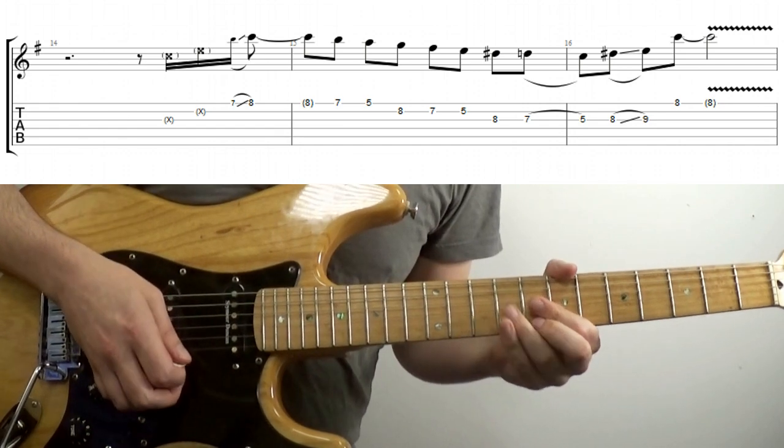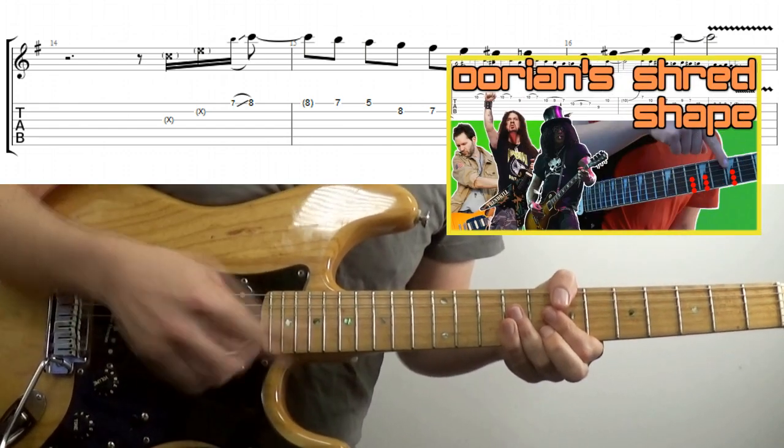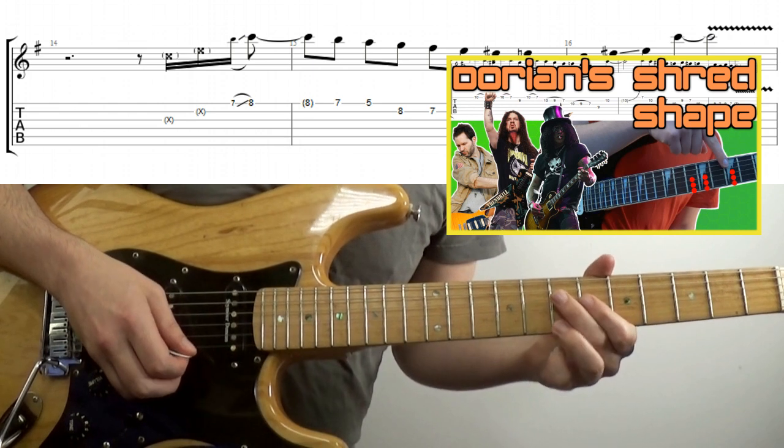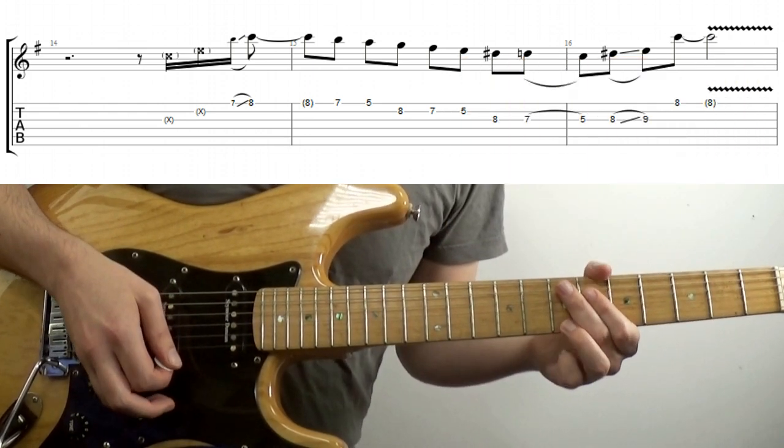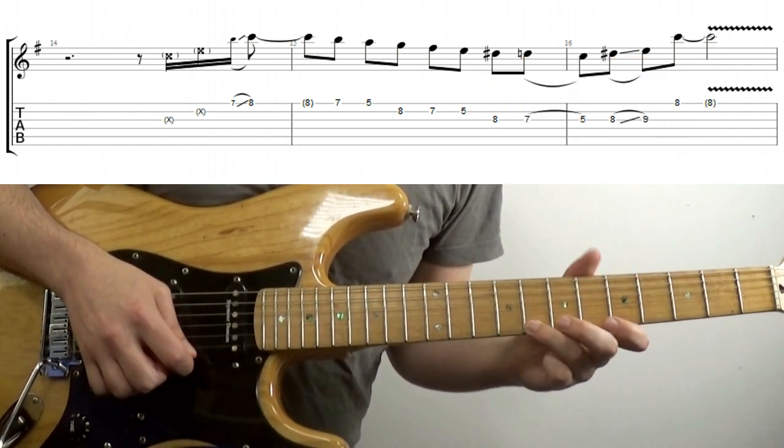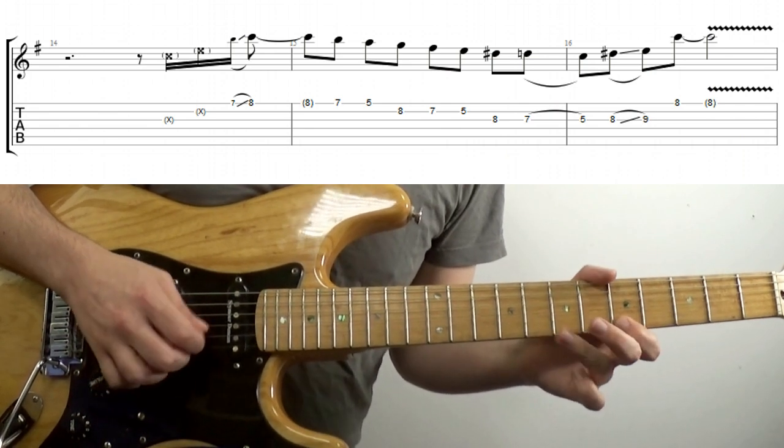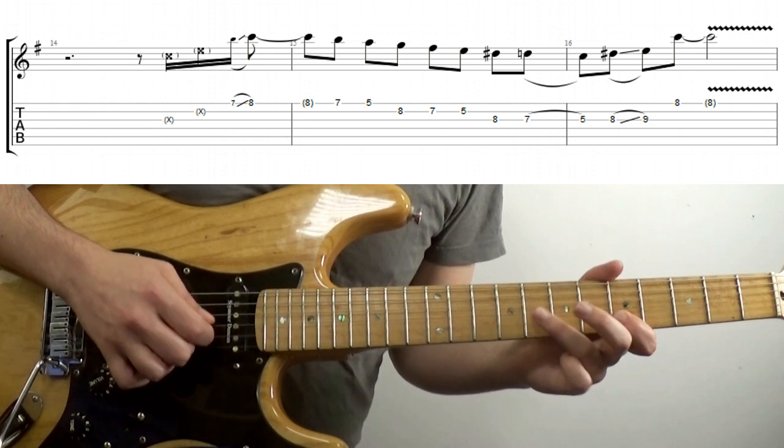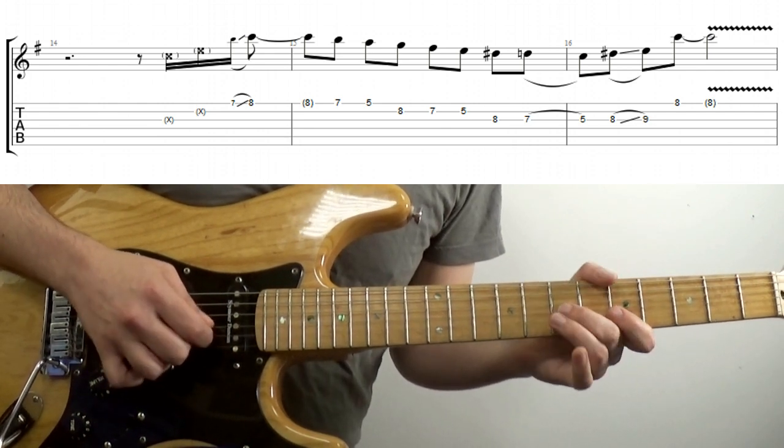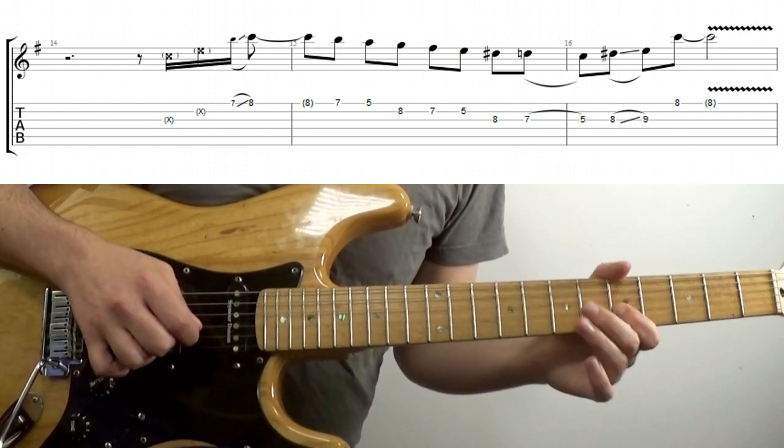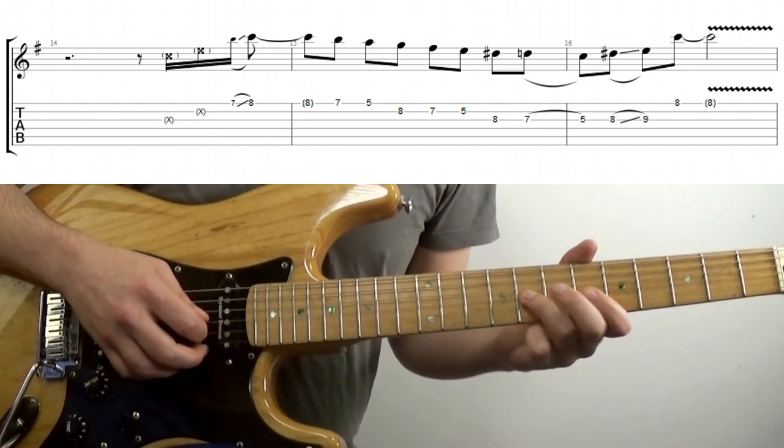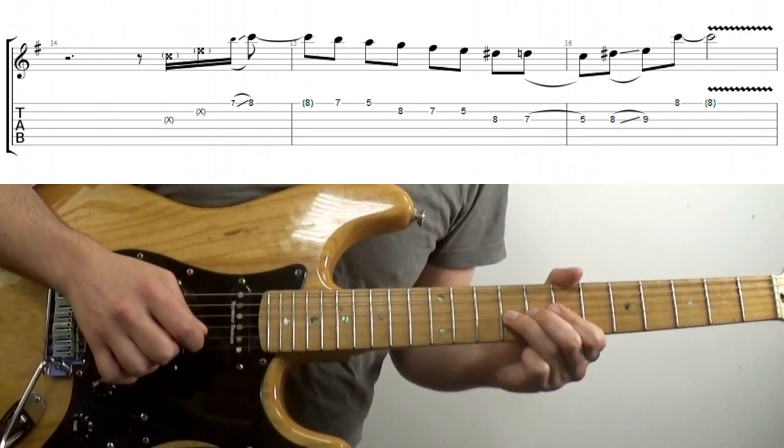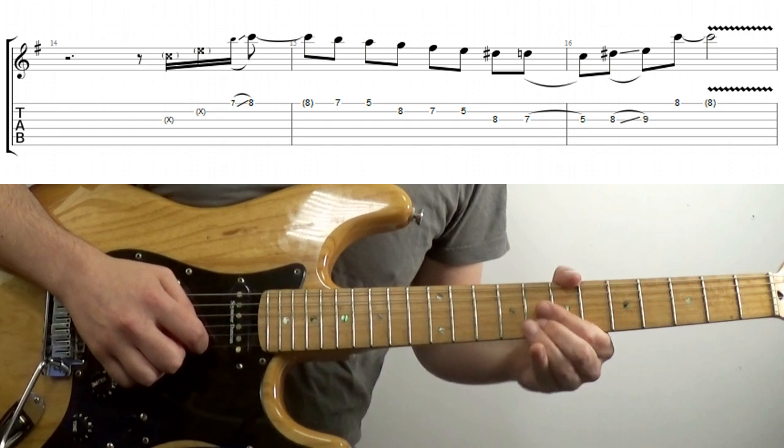Using the Dorian blues scale tutorial on the top right, we're sliding from the second up to the flat third, you've got a little rake here as well. Second, root, flat seventh, major sixth, fifth, blues note, fourth, flat third, the blues note again, the flat fifth, sliding up to the fifth, and then ending on the third, the flat third I should say, sorry.